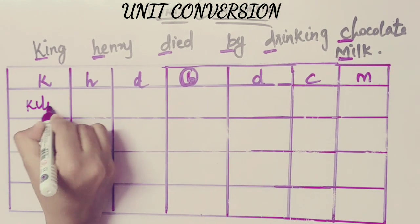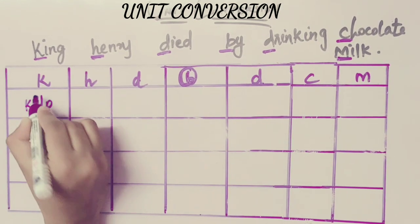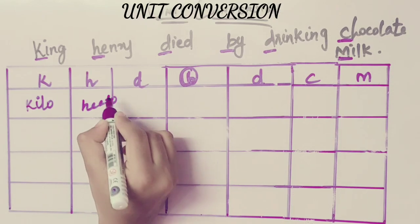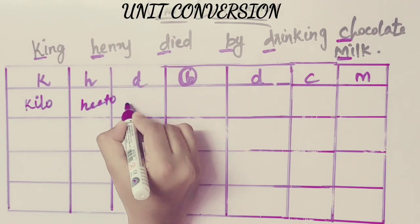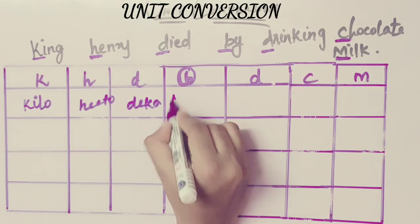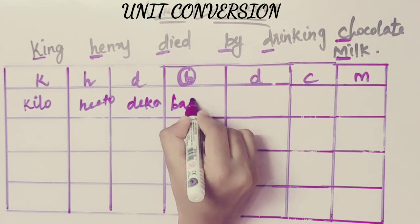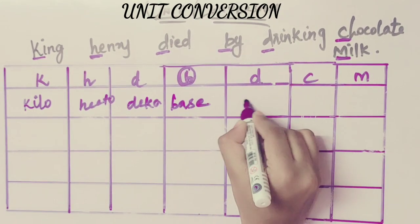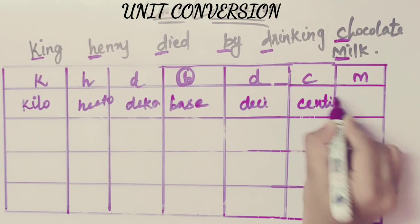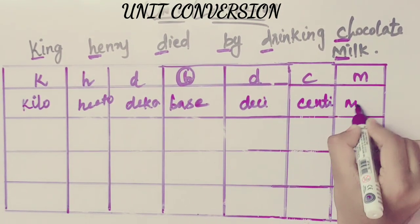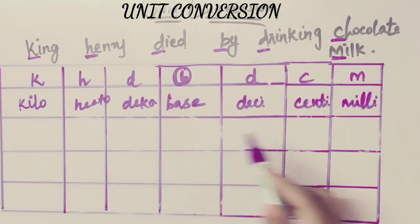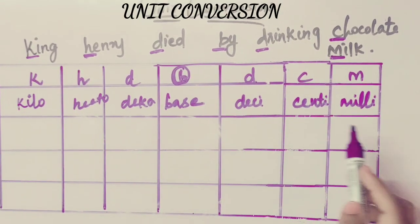It's very important. In this sentence: K is Kilo, H is Hecto, D is Deca, B is the Base unit, D is Deci, C is Centi, M is Milli. Okay, this is the short form — K, H, D, B, D, C, M.